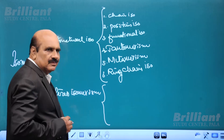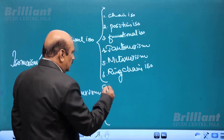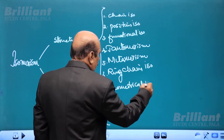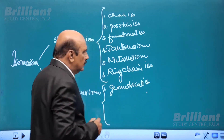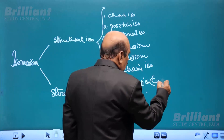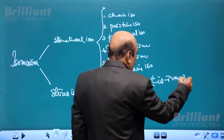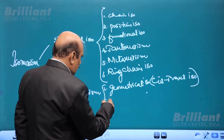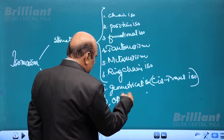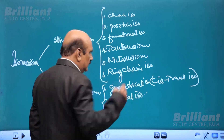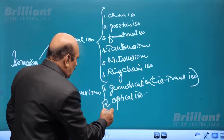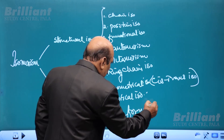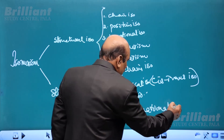Stereoisomerism can be classified into three. One is geometrical isomerism, which is also called cis-trans isomerism. The second one is optical isomerism, and the third one is conformational isomerism.